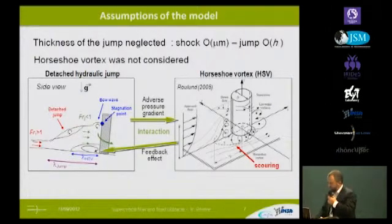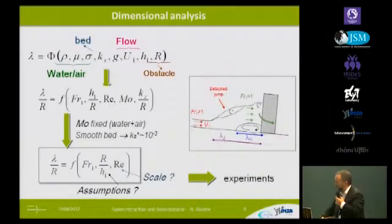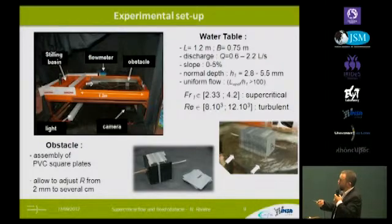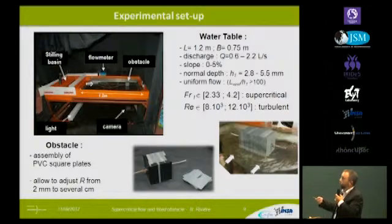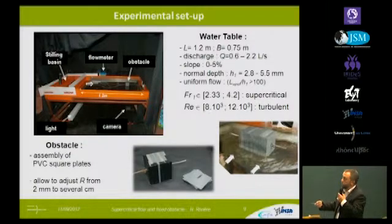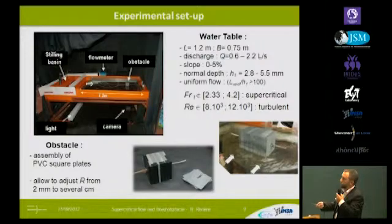To see if the model is still valid, we performed some experiments using a small water table — 1.2 meters long and 0.75 meters wide. We can vary the discharge and slope to obtain different depths and, most importantly, different Froude numbers. Reynolds number is always in the turbulent regime. We can also modify the width of the obstacles, which is made from an assembly of small PVC square plates, ranging from two millimeters to several centimeters.